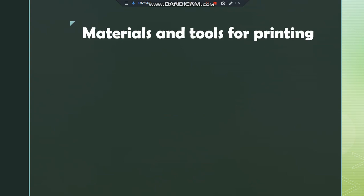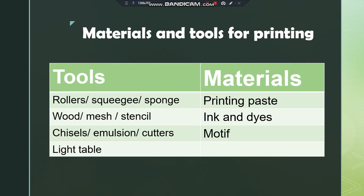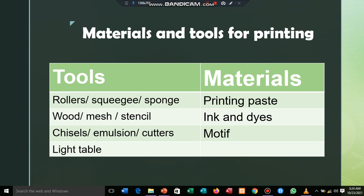The tools used in printing include rollers, wood, and chisels — used in block printing. We also have the squeegee, the mesh, and the emulsion or photo emulsion — used in screen printing. Then we have the sponge, the stencil, and the cutters — used when doing stencil printing.